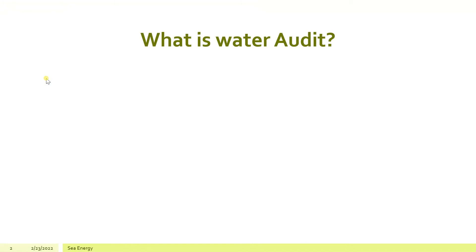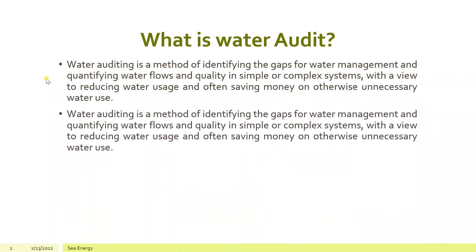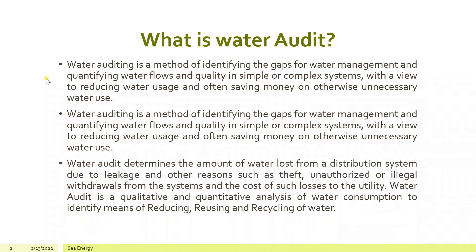What is a Water Audit? Water Auditing is a method of identifying the gaps for water management and quantifying water flows and quality in simple or complex systems, with a view to reducing water usage and often saving money on otherwise unnecessary water use. Water Audit determines the amount of water lost from a distribution system due to leakage and other reasons such as theft, unauthorized or illegal withdrawals from the systems, and the cost of such losses to the utility.